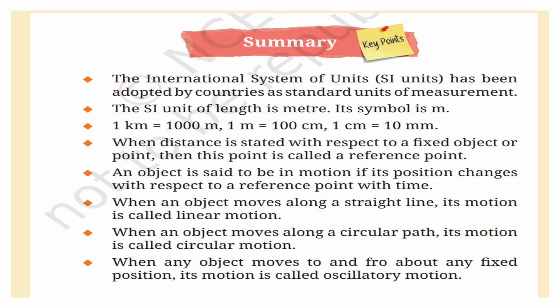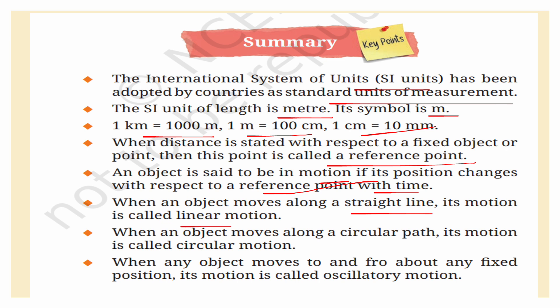Summary: The International System of Units (SI units) has been adopted as standard units of measurement. The SI unit of length is the meter (m). 1 kilometer = 1000 meters; 1 meter = 100 centimeters; 1 centimeter = 10 millimeters. When distance is stated with respect to a fixed object, that point is called a reference point. An object is in motion if its position changes with respect to a reference point over time. Linear motion is along a straight line; circular motion is along a circular path; oscillatory motion is to and fro about a fixed position.